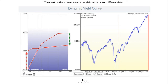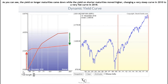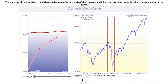The chart on the screen compares the yield curve on two different dates. The darker red line is the yield curve in early 2010, while the bright red line is the curve in late 2018. As you can see, the yield on longer maturities came down while the yield on shorter maturities moved higher, changing a very steep curve in 2010 to a very flat curve in 2018.